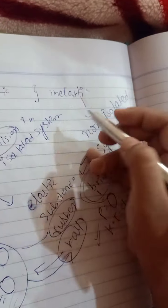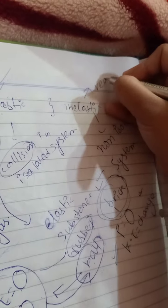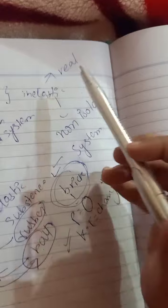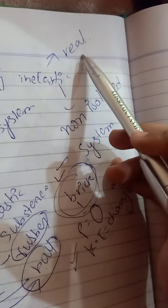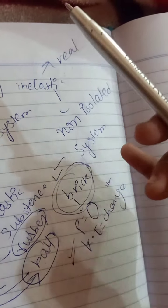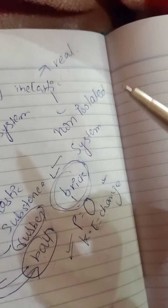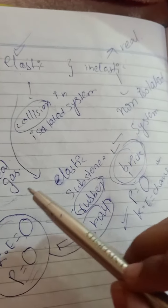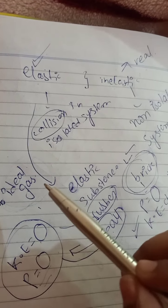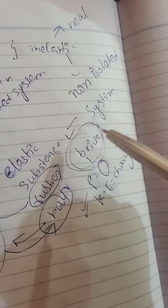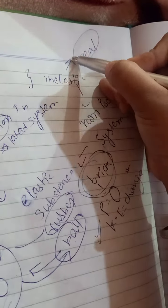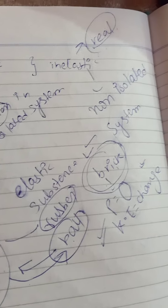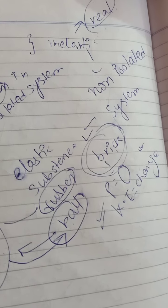The example of inelastic motion is real gases. In ideal gases the kinetic energy is not changed, but in real gases the kinetic energy is changed, that's why they have less kinetic energy. So those are the two things — elastic and inelastic — upon which the law of conservation of momentum depends.